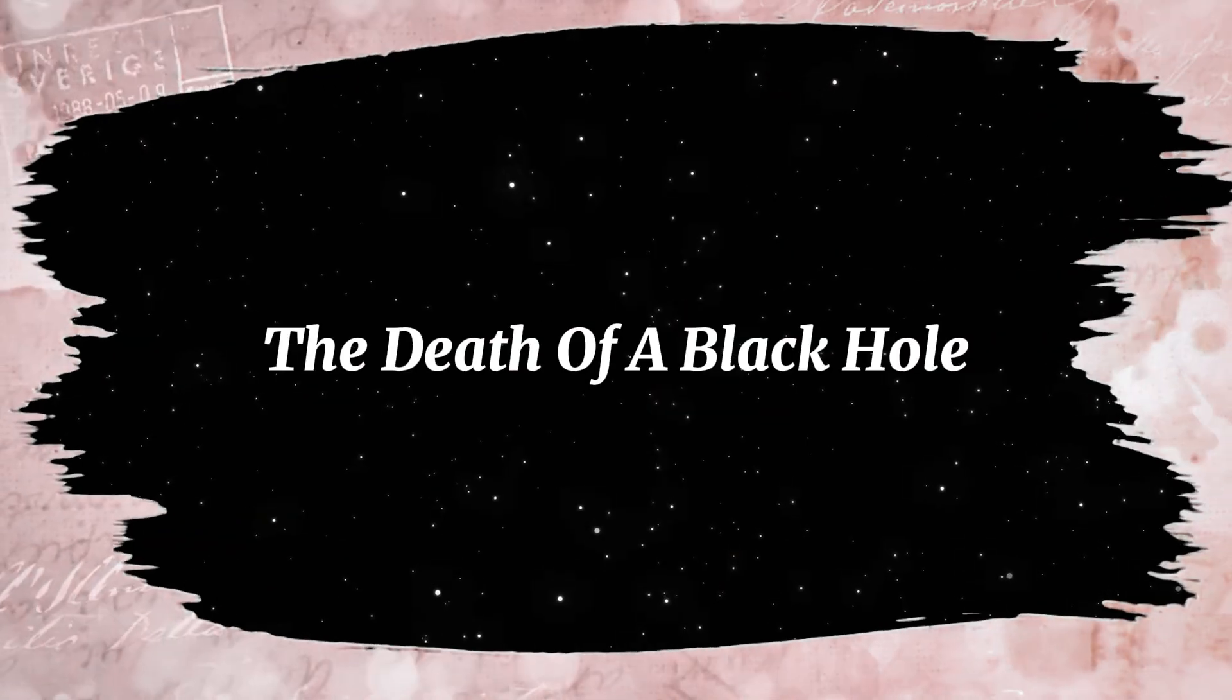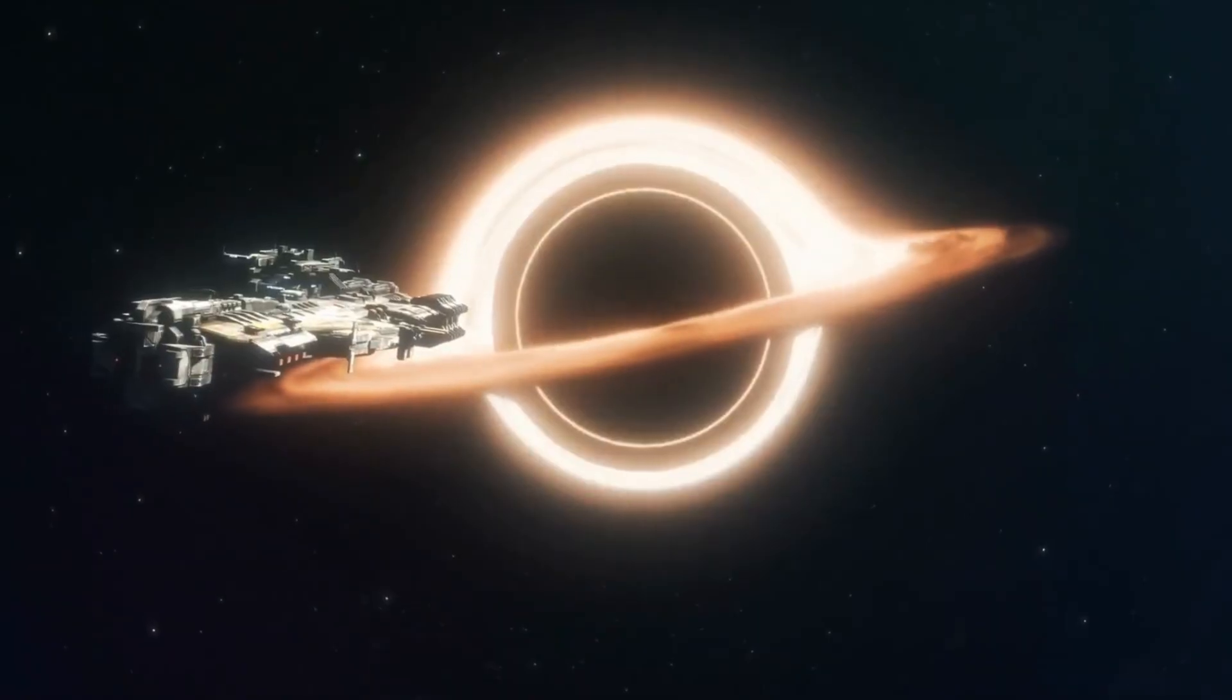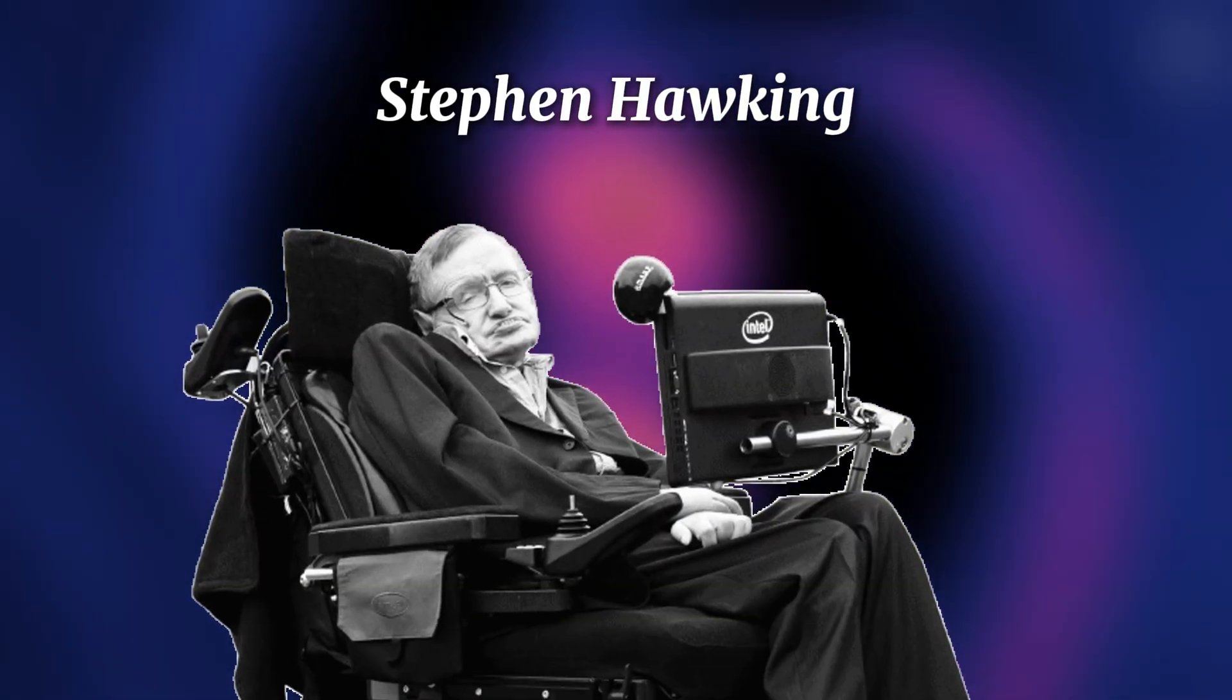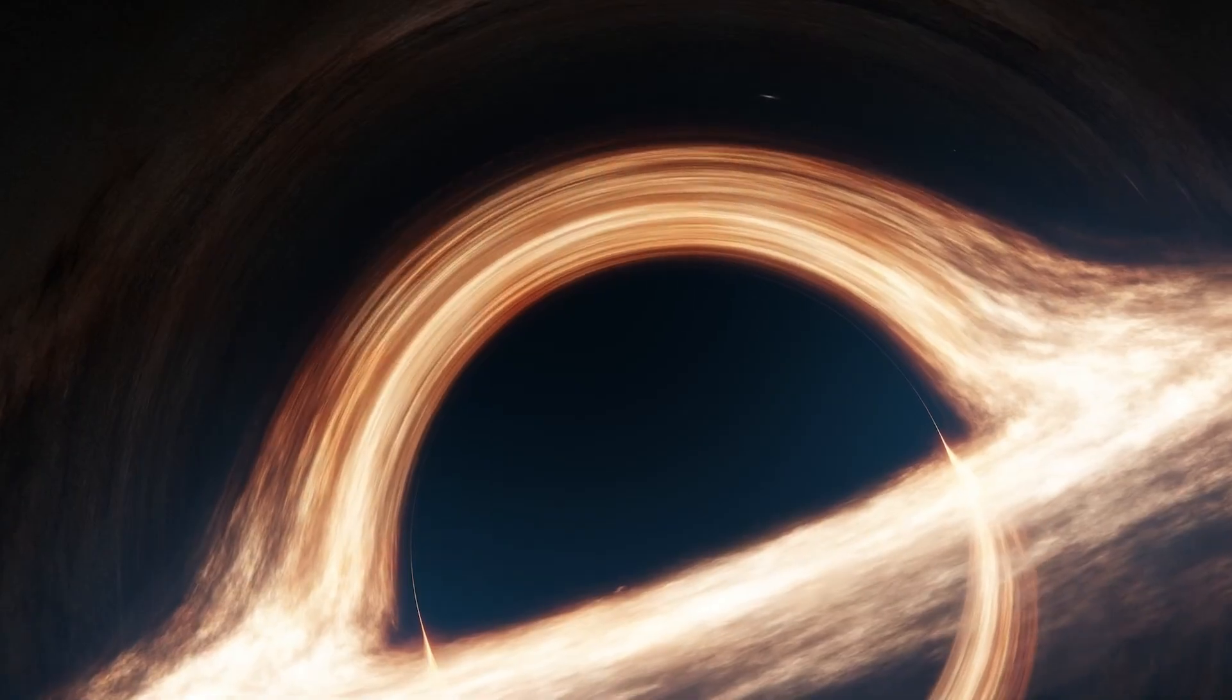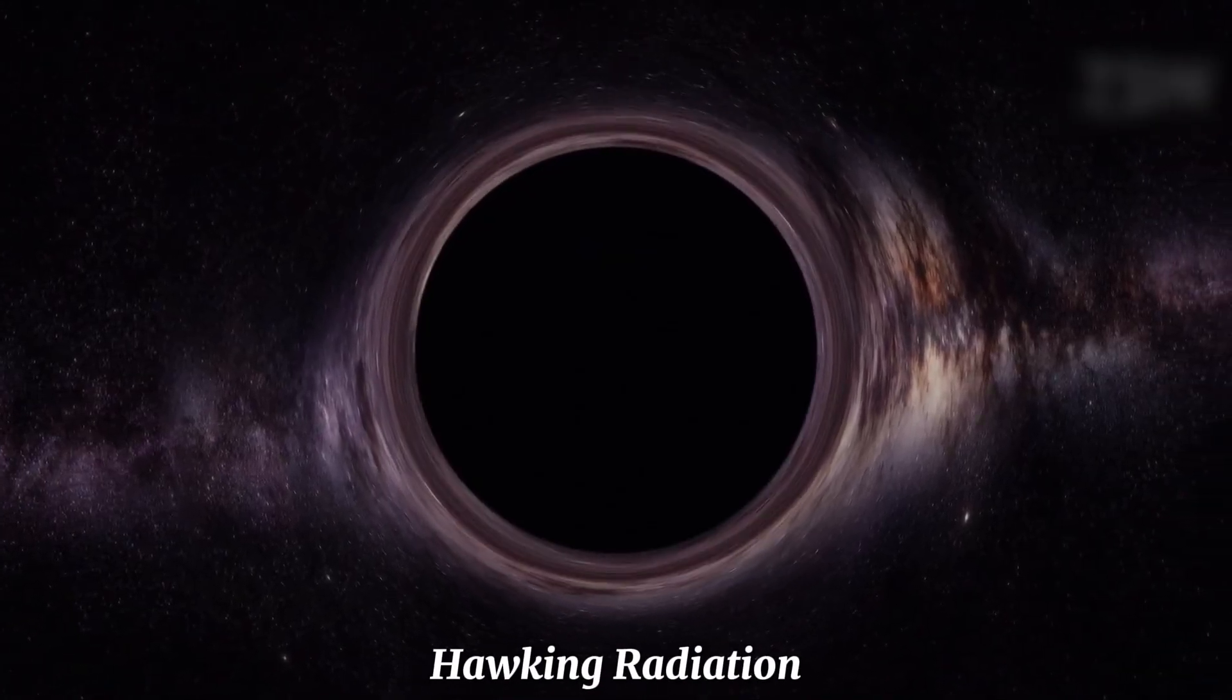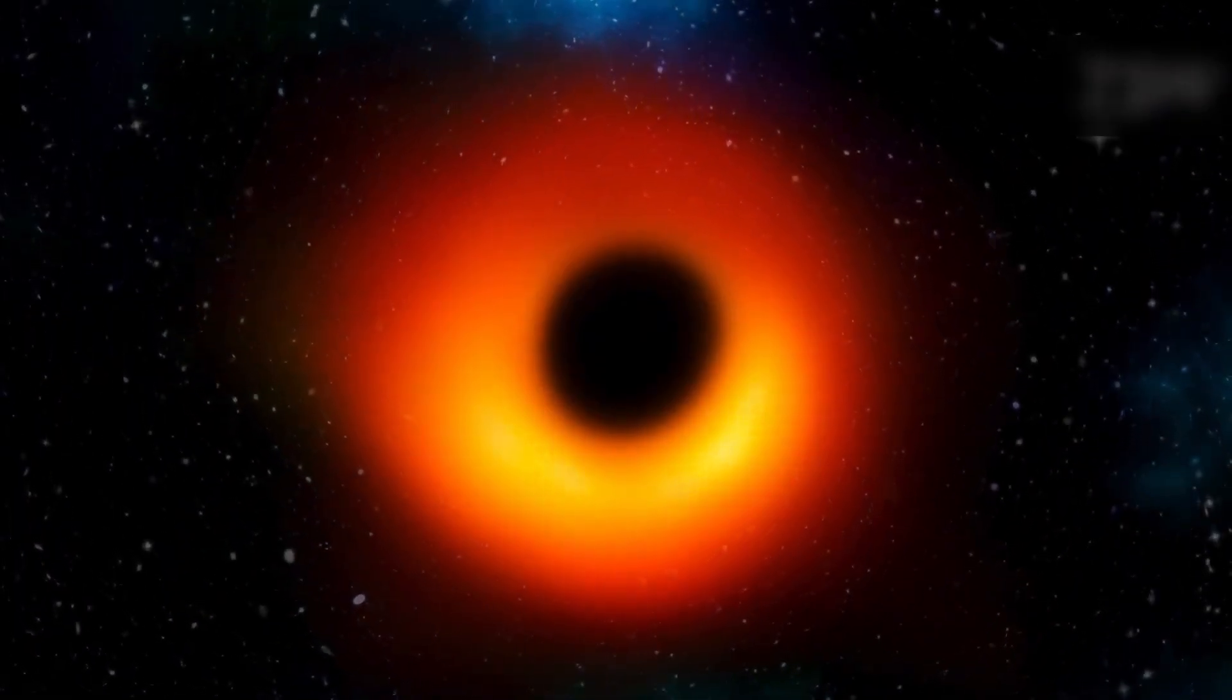The death of a black hole. For decades, scientists believed black holes were eternal. How could something that traps everything, even light, ever disappear? Then came Stephen Hawking, who flipped that idea upside down. Hawking discovered that black holes slowly leak energy through a process called Hawking radiation. It happens because of quantum effects right at the event horizon.